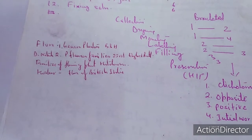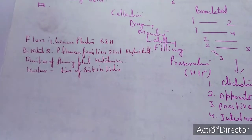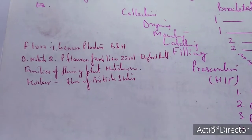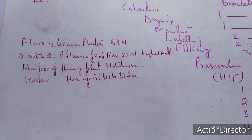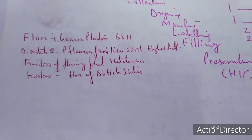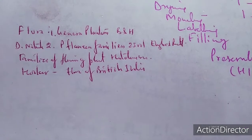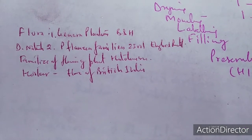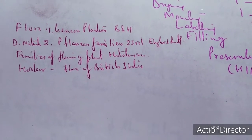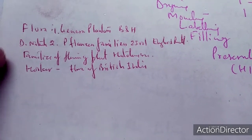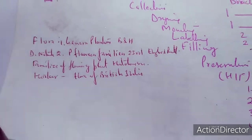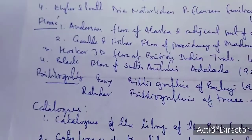Certain flora literature is also associated with the herbarium. These include Genera Plantarum by Bentham and Hooker, Die Natürlichen Pflanzenfamilien, Families of Flowering Plants by Hutchinson, and Flora of British India in 7 volumes by Hooker.